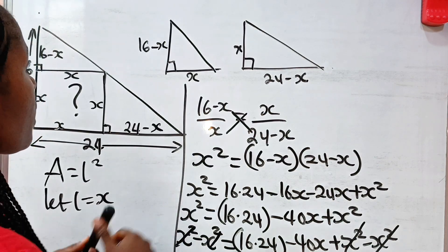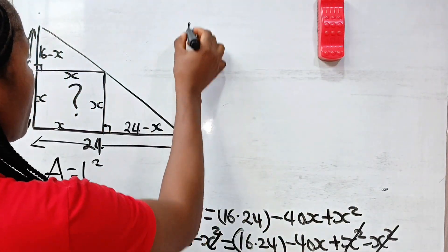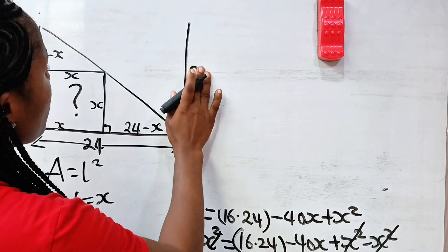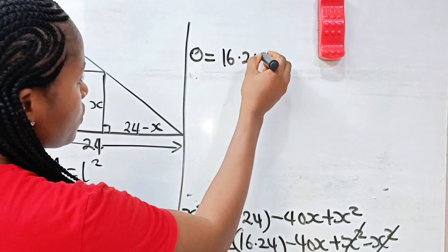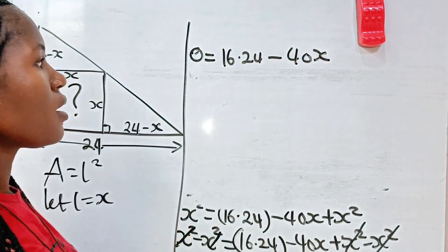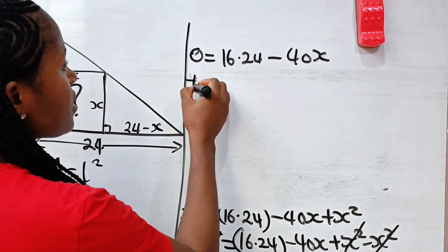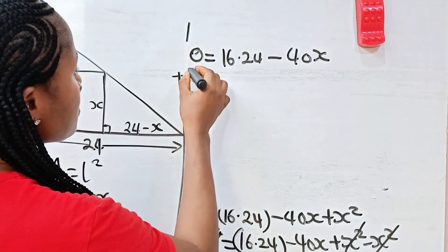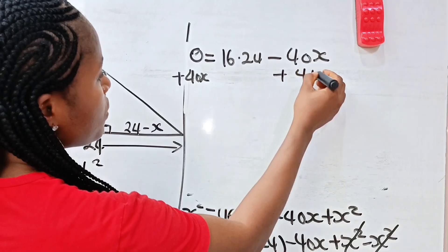Now, let's bring this 40X to this side to remove the negative sign. So we add 40X to both sides. 0 plus 40X is equal to this one, this side plus 40X. So this will cancel this.